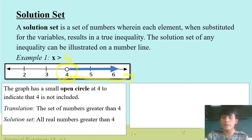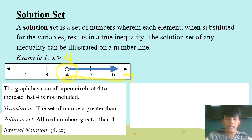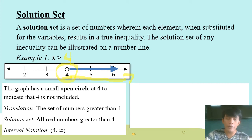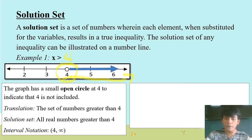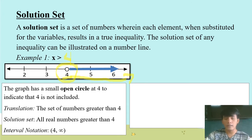For the interval notation, it is open parenthesis 4, comma, infinity. Why infinity? Because the values go infinitely to the right.